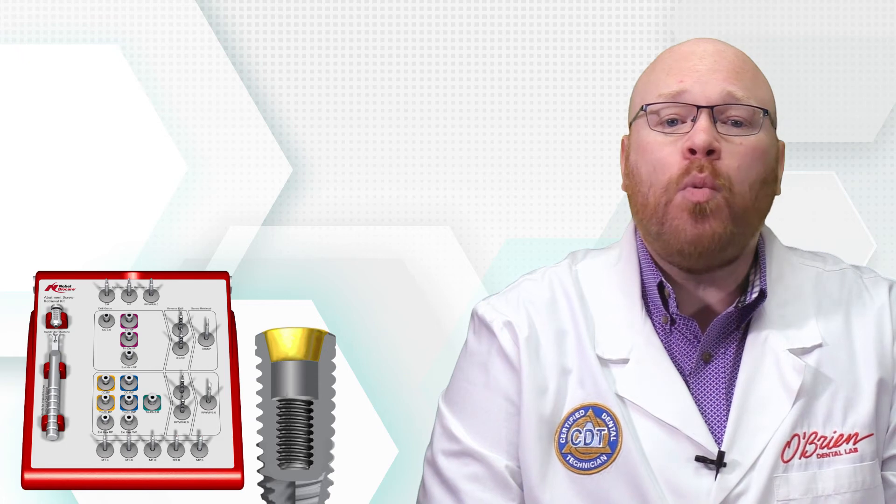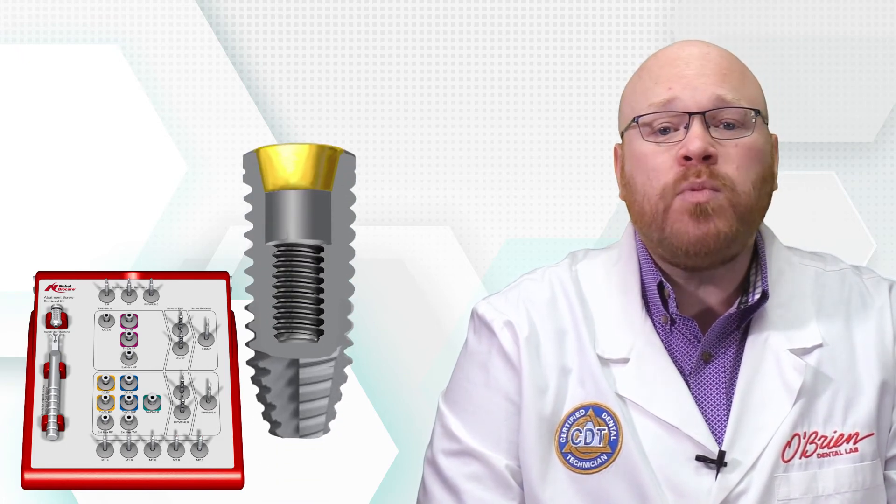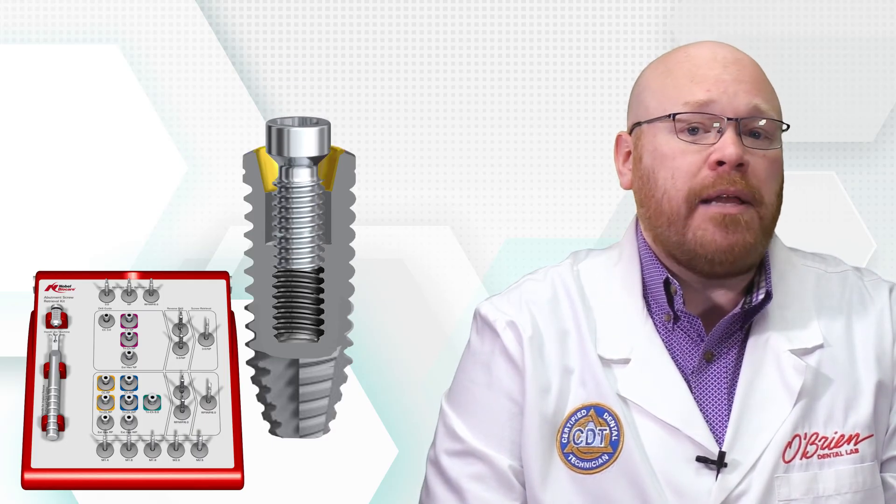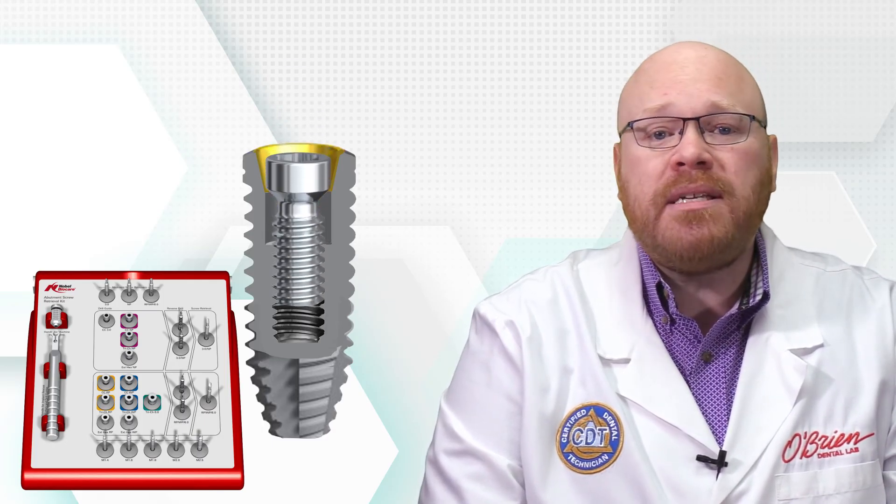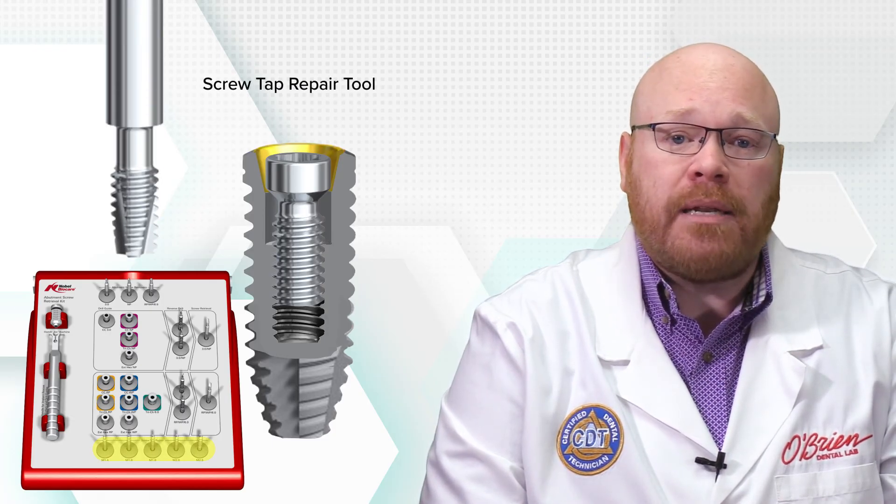Once the screw is removed, you'll want to evaluate the internal implant threads for damage. The easiest way to do this is to take an unused screw and slowly screw it into the implant. If you encounter any resistance, you may want to use the screw tap repair tool which is located at the bottom of the screw retrieval kit.